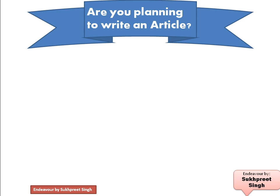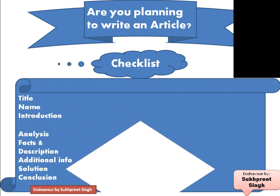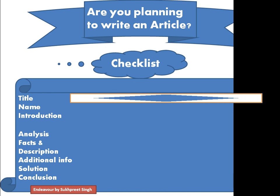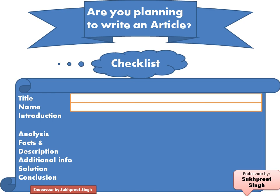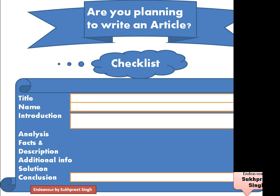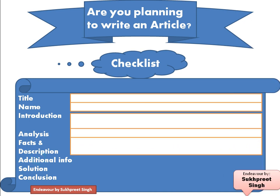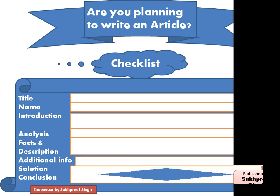If you are planning to write an article, you should be aware that article writing consists of this checklist. Article writing starts with a title, then the name of the writer — the byline. Then the article is to be introduced: the first paragraph is the introduction. Then we do the analysis of that topic, mention facts and figures, describe the article further, add additional information, then a solution, and finally a conclusion.